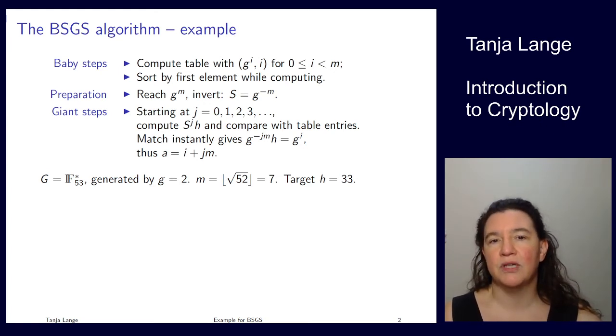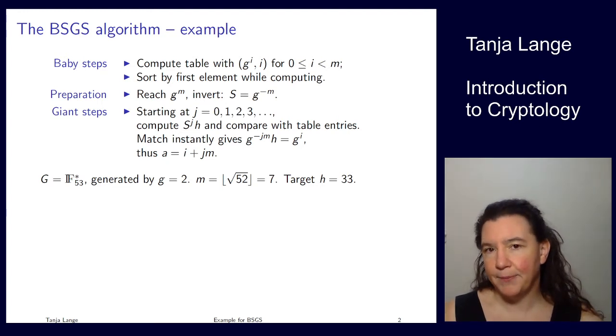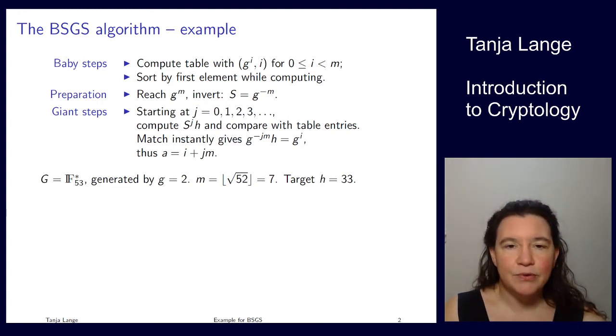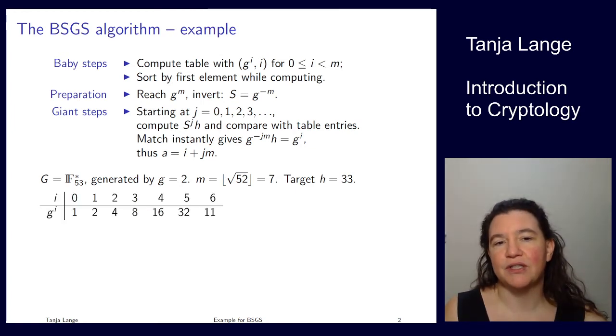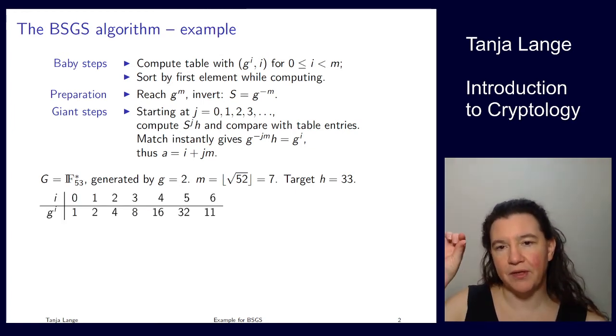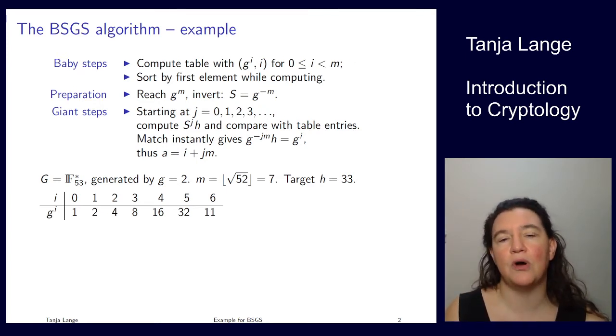The baby steps ask us to compute a table where we put in g to the i comma i. On paper or slides, I skip the sorting, so I just write the table with i and g to the i. This is pretty simple because 53 is larger than 32, so all the way up to 32, I'm just seeing the normal powers of 2 without any reduction.